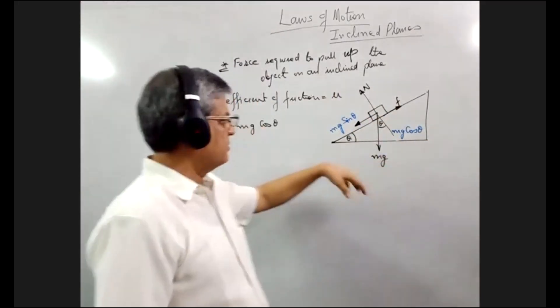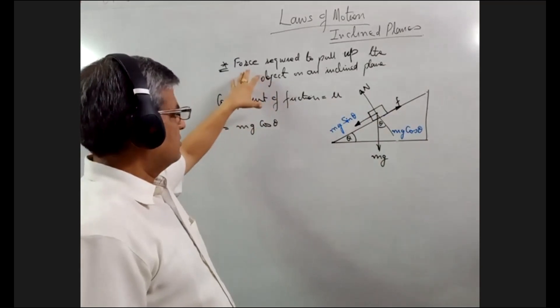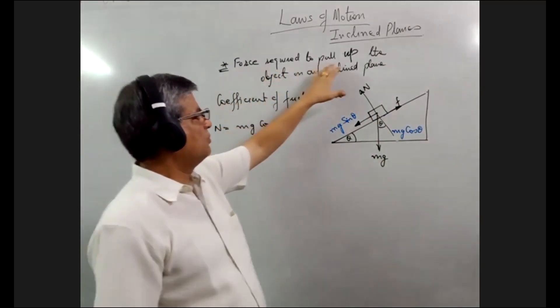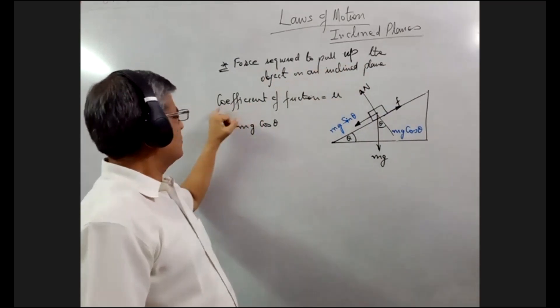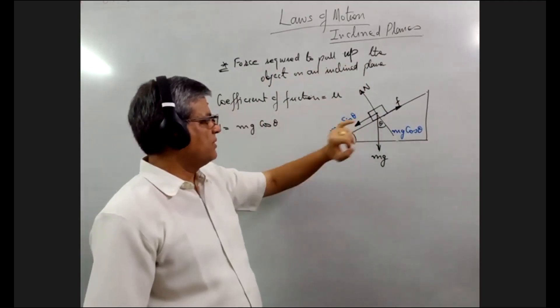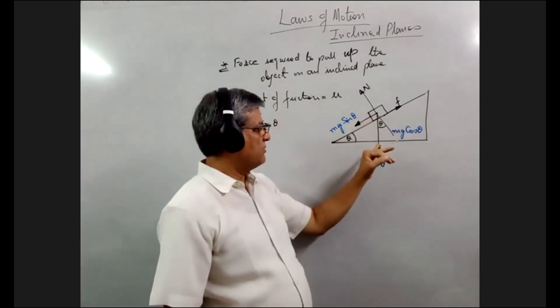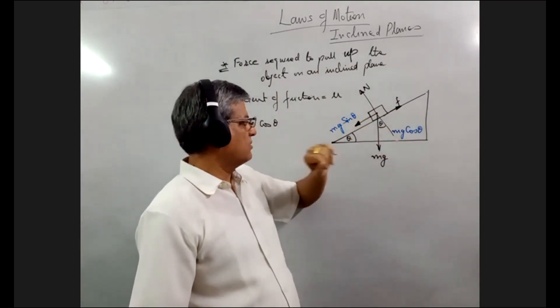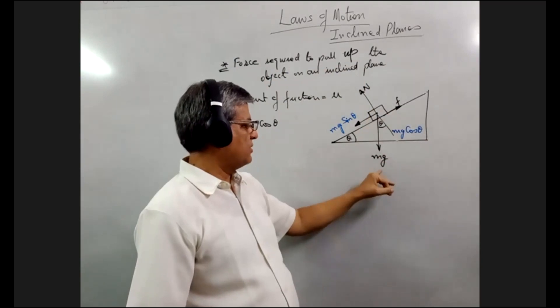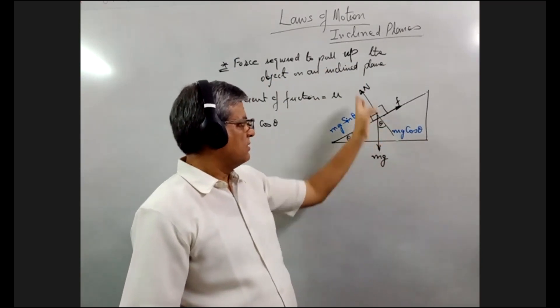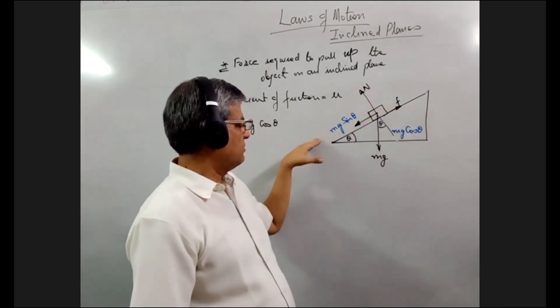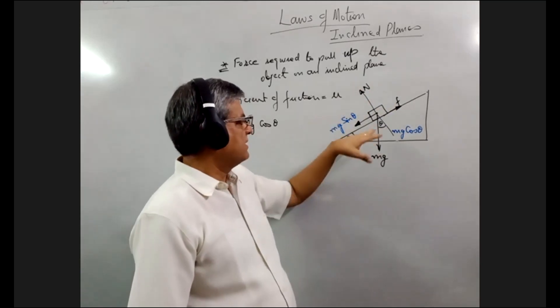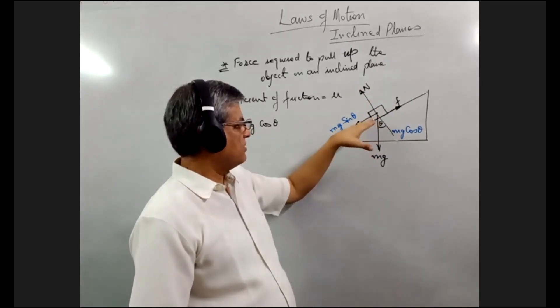Now we are considering the second case: finding the force required to pull up an object on an inclined plane. The coefficient of friction is mu. The forces acting on this object are the weight of the body acting downward. We resolve this weight along the normal as mg cos theta and parallel to the plane as mg sin theta, with the force of friction stopping the body.